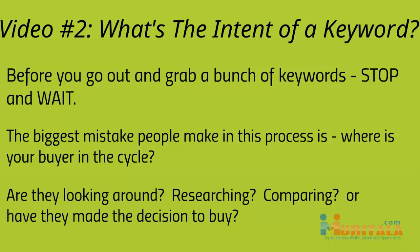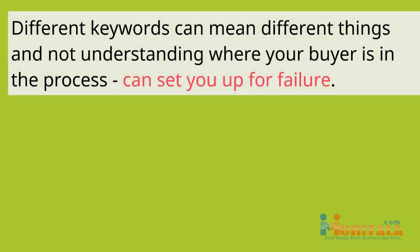You might see keywords out there where somebody is searching for a specific model number — for an appliance or parts. The reason they're doing that is because if they're searching very, very specifically, they're more likely going to buy. So if you can think about that, then when you get them to your website and you get them to your articles, your content, your videos, you've set yourself up for success. Different keywords can mean different things, and not understanding where your buyer is within that process can set you up for failure.